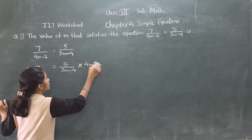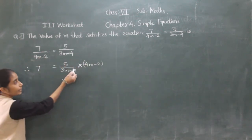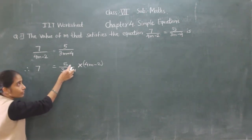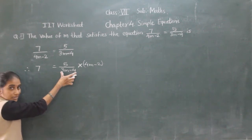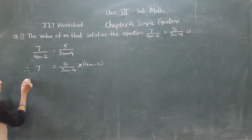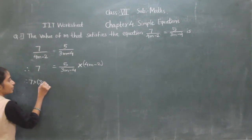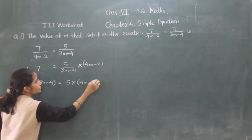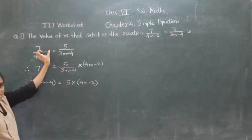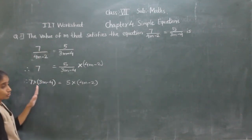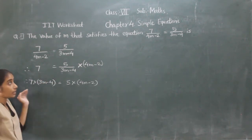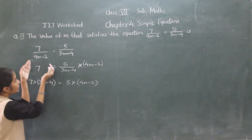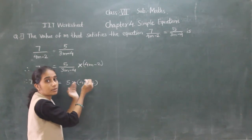So 4n minus 2, this number is here multiplied. Now 3n minus 4 is here in the denominator — divide. It will transfer to the left hand side and become multiplied. So we multiply by 3n minus 4. You need to put this number in brackets, because this total number is multiplied for this whole bracket.